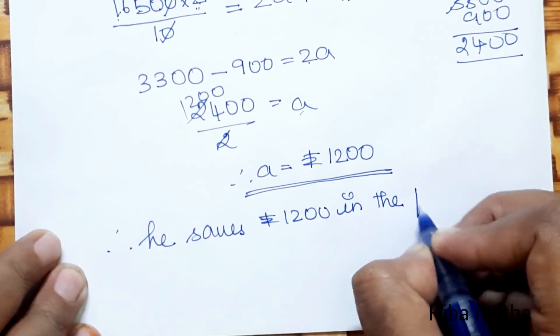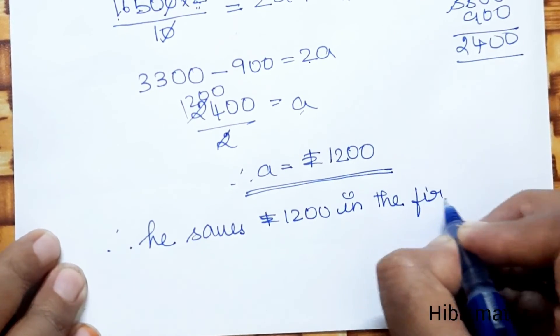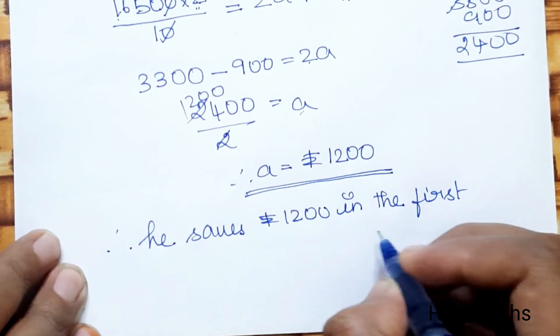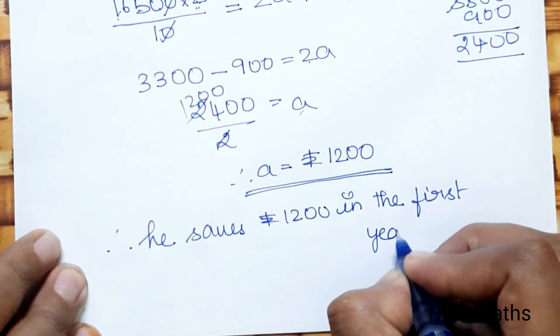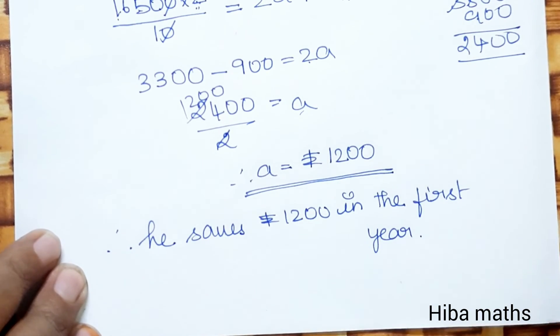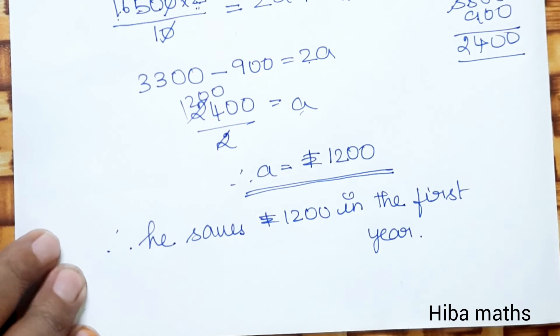That is why we use the sum formula for AP. How much do you use the AP formula? Do you practice? Thank you so much for watching. The answer for the first year savings is Rs.1,200.